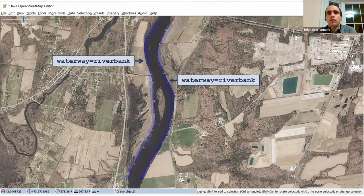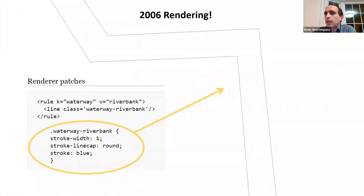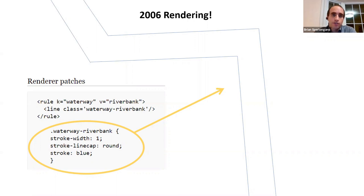This early riverbank scheme from 2006 allowed renderers to draw outlines on the banks of rivers. A renderer style rule from that time showed that riverbank objects were actually rendered as lines. Presumably the inside was covered with natural=water, but what we know is that they did render riverbank edges.